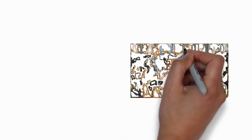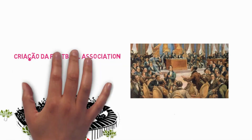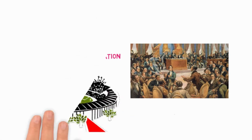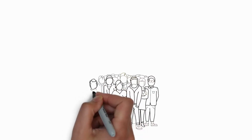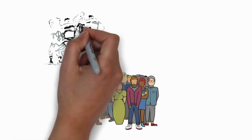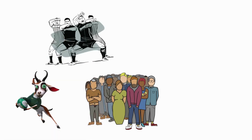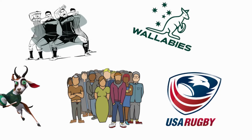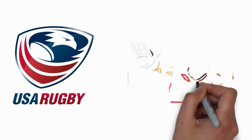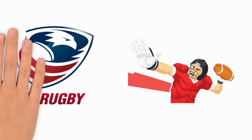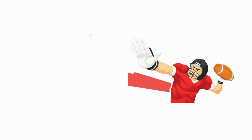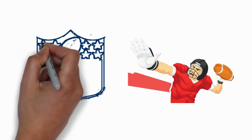Após a Rugby School redigir as suas primeiras regras, outras escolas passaram a fazer o mesmo. Mas sem uma uniformização, as práticas fora do ambiente escolar ficavam cada vez mais difíceis, pois cada jogador defendia as regras já pré-estabelecidas pelas suas escolas. Foi aí que surgiu um movimento que estabeleceu um código único, levando à criação do Football Association — ou o futebol que conhecemos hoje. Algumas dessas regras não agradou os amantes do rugby, levando ao rompimento com a associação.